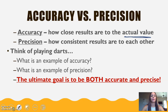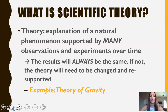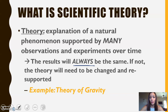A theory is an explanation of a natural phenomenon supported by many observations and experiments over time, and the results will always be the same. An example is the theory of gravity — if your pencil rolls off your desk, it's going to fall to the ground. If it doesn't, we have a bigger problem and need to reevaluate the theory of gravity.